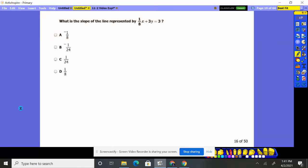What is the slope of the line represented by 1/8 X plus 3Y equals 3? To get the slope, we need Y equals whatever in front of X. That's the key. So we've got to get Y by itself.